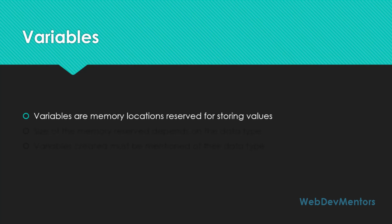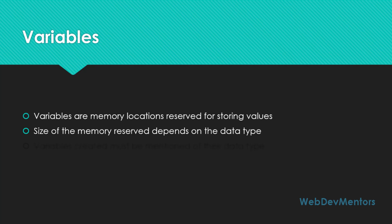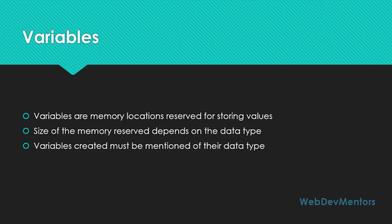Variables are memory locations reserved for storing values. If you want to store a value in Java, you need to create a variable, and based on the variable created, the memory will be allocated when the program is executed. The size of the memory allocated or reserved depends on the data type that you're creating the variable for. You have to mention the type of the data before running the program.